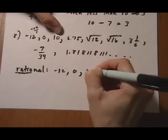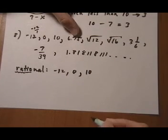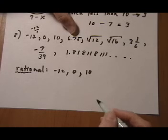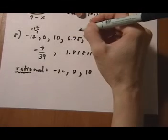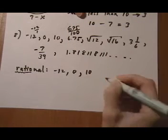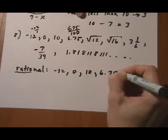10, 10 over 1, yep. 6.75, any ending decimal could be written as a ratio of two integers. 6.75 would be 675 hundredths. So that's a rational number.